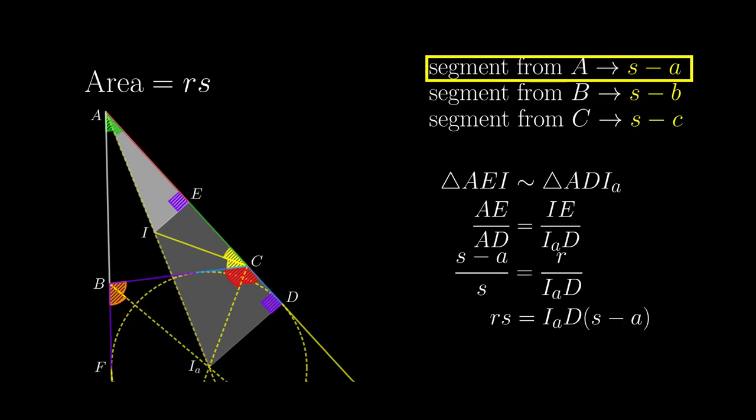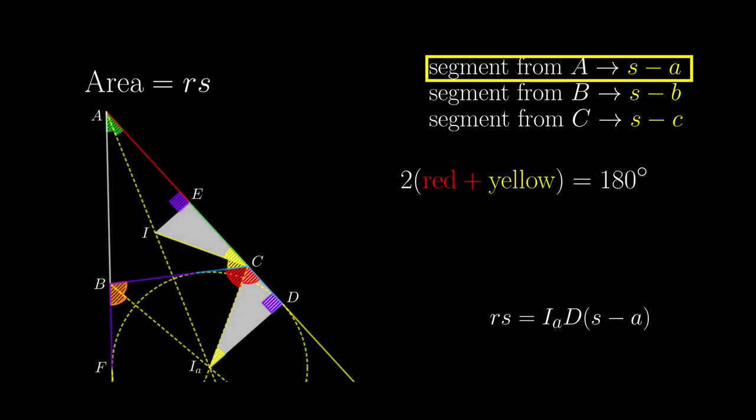For this pair of triangles, we observe that around vertex C, red and yellow angles appear twice, adding up to 180 degrees, so these two angles add up to 90 degrees. At the same time, these two angles add up to 90 degrees because of how angles sum up in the triangle. Combining with the two right angles, we can prove the similarity of the two triangles.